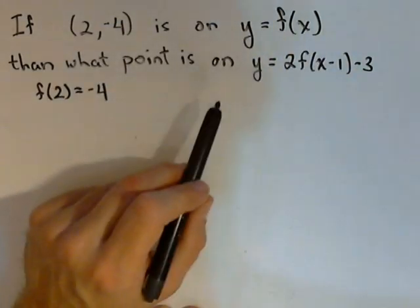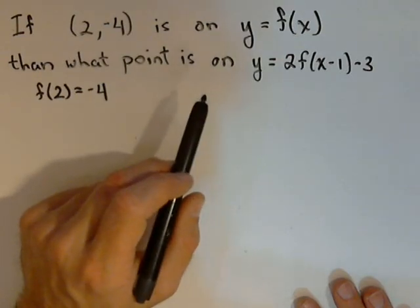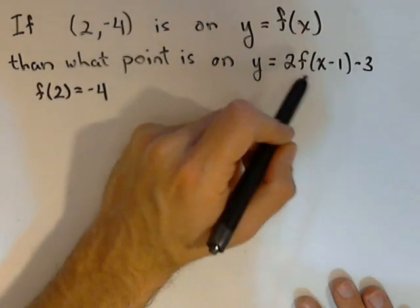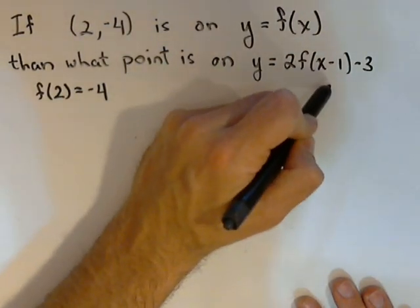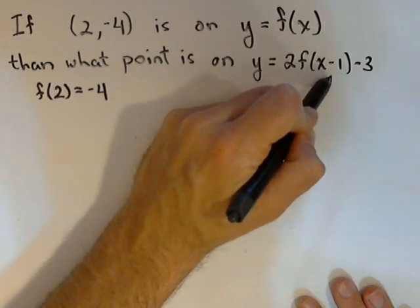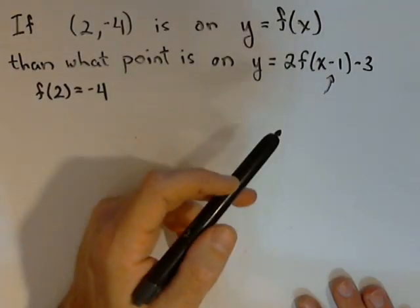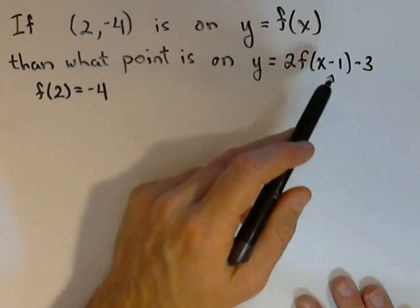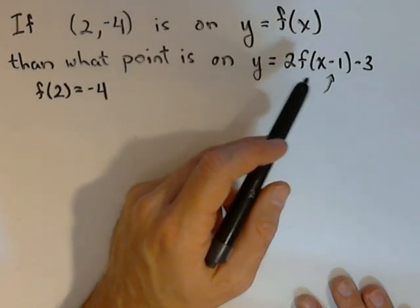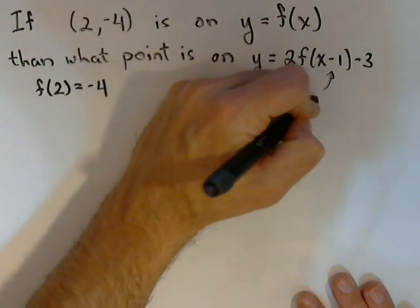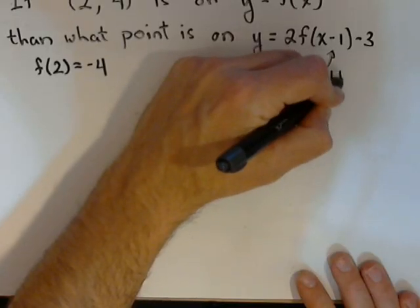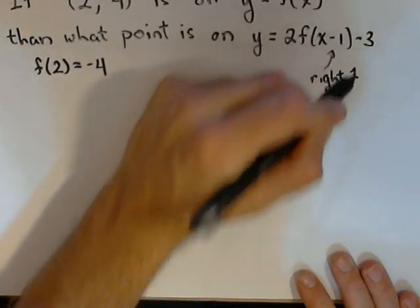We want to look at what transformations we have going on to figure out what the new point will be. First, let's look on the inside. We see that we have x - 1, and when we subtract 1 on the input, that's going to shift our graph right 1 unit.